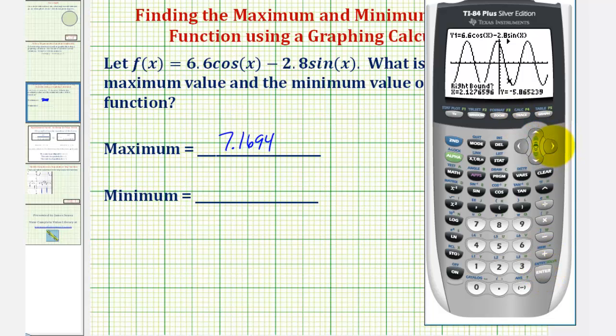Right bound, we'll move to the right side of the low point. Here. Press enter. And then, for guess, I'll just press enter this time. And, notice how the minimum value is what we expected. It's approximately negative 7.1694.